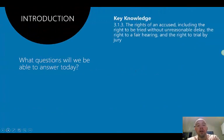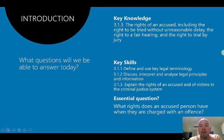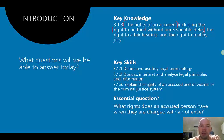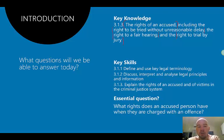Today we are on 3.1.3, the rights of the accused. What is important here is the general understanding of the dot point — the rights of the accused — but it then says 'including' and gives us three specific rights: the right to be tried without unreasonable delay, the right to a fair hearing, and the right to a trial by jury. The study design being structured this way means we can be given a broad question, like 'explain the rights of an accused person in a criminal trial.'